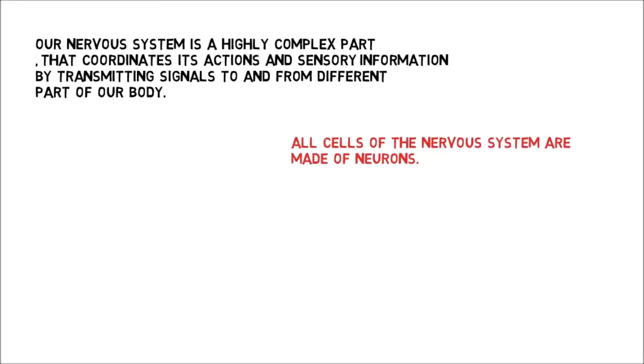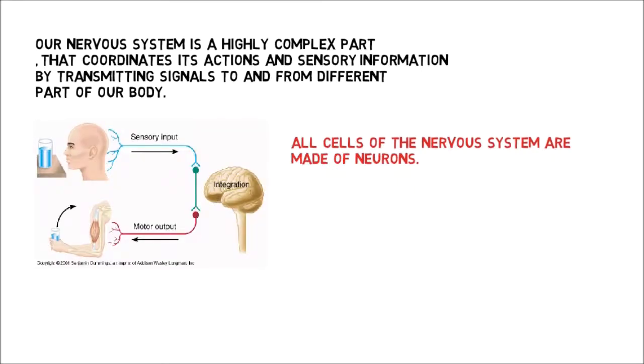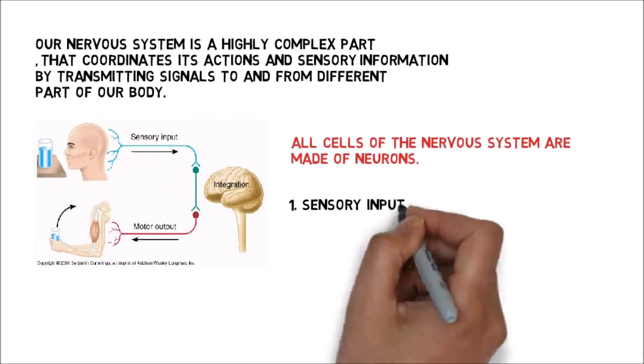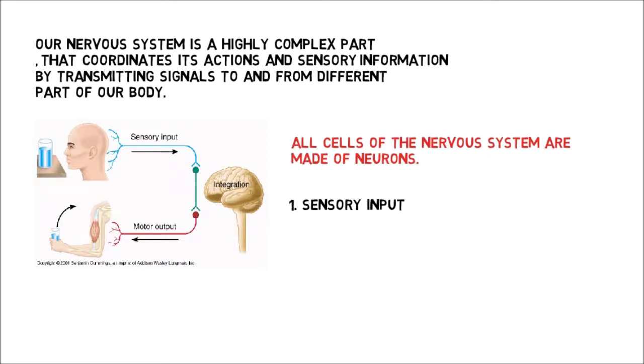The nervous system has three main functions. Number one: sensory input. Sensory input is when the body gathers information or data. It is the stimuli that is received by our senses like smell, touch, taste, sight, and hearing. Anything that we perceive using our senses can be called sensory input.